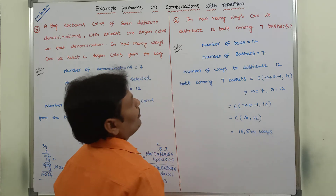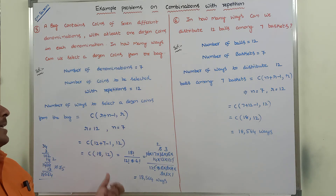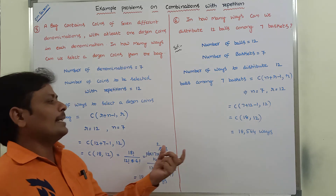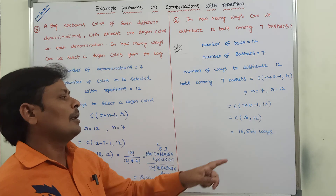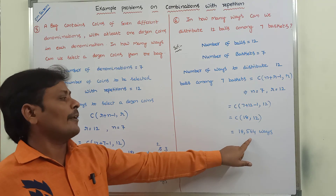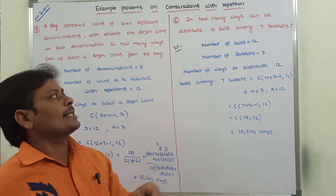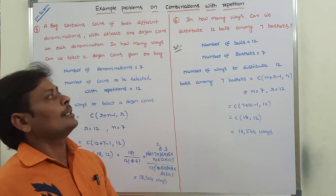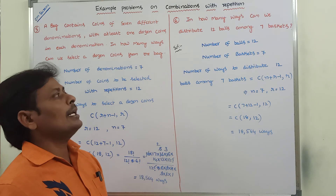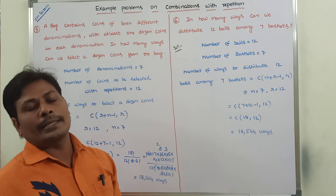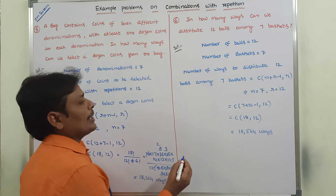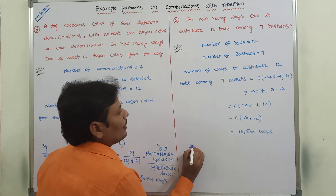So both problems contain the same answer. In this way, we solve the given problems. There are 18,564 ways to distribute 12 balls among 7 baskets with repetition allowed. Thank you for watching this video.